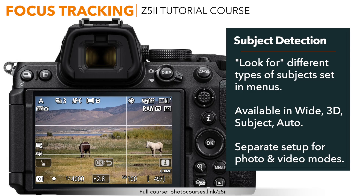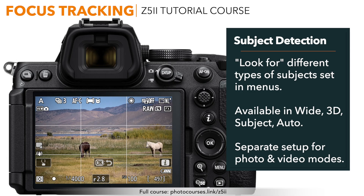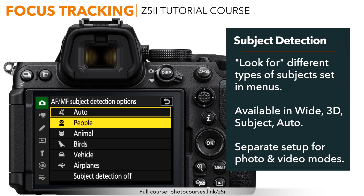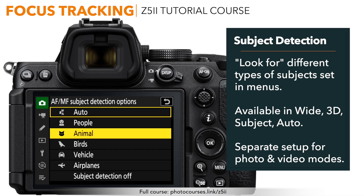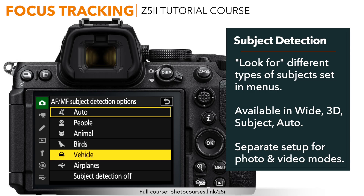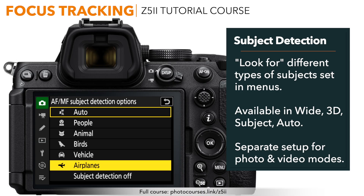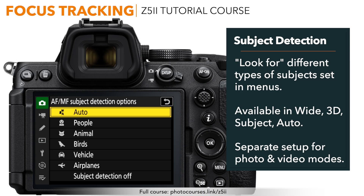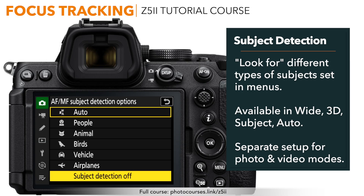Subject types that the camera has been trained to recognize include people; animals, which is limited to dogs, cats, and birds, though the camera may recognize other animals; just birds; vehicles, which include cars, bikes, and airplanes; and just airplanes. There's also an auto option where the camera tracks the first detected type of the subjects previously listed, or you can turn this feature entirely off.